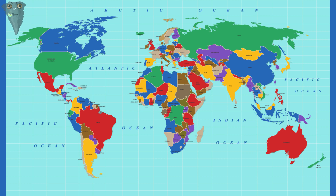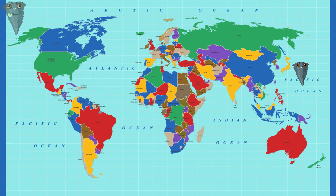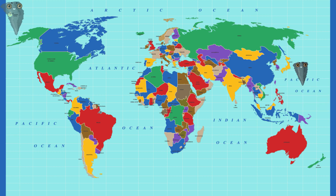Hurricanes have different names depending on the region of the world where they occur. For example, in the Atlantic Ocean and Northeast Pacific Ocean, hurricanes are also called tropical cyclones or simply cyclones. In the Northwest Pacific Ocean, hurricanes are known as typhoons.